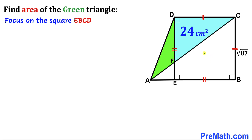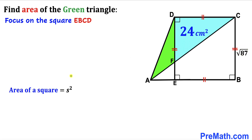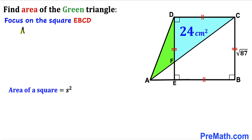Let's focus on square EBCD whose side length is square root of 87. Recalling the area of square formula: area equals S squared, where S represents the side length. Therefore the area of square EBCD is square root of 87, whole squared, which equals 87 centimeters square.